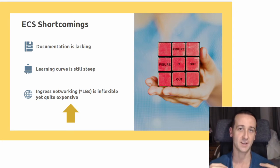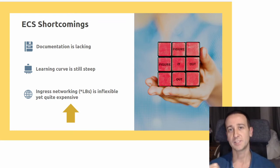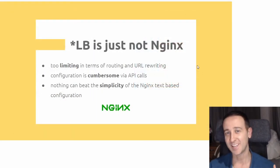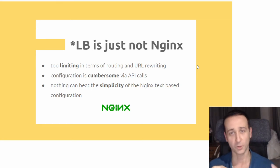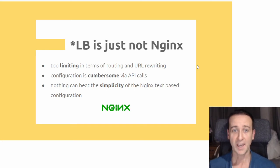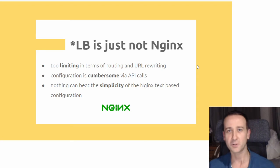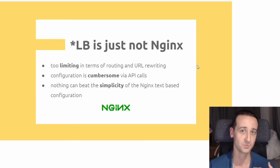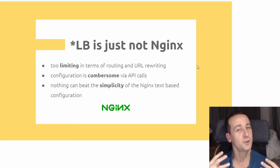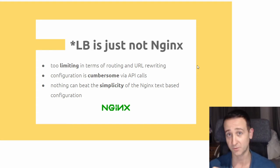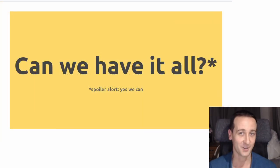The biggest hurdle I've personally found in using ECS is the quality of ingress networking available from Amazon — the various ALBs, ELBs, and Network Load Balancers. They are quite inflexible and also quite pricey for what they really offer. All these load balancing solutions are just not as good as Nginx: they are too limiting in terms of routes, URL rewriting, and the types of services you can reverse proxy. They're also hard to configure — listeners, rules, placement groups — it's quite fiddly, and nothing really beats the simplicity and expressiveness of the Nginx configuration file.